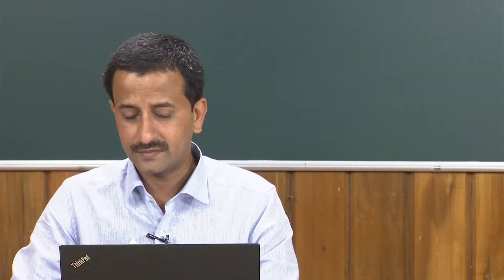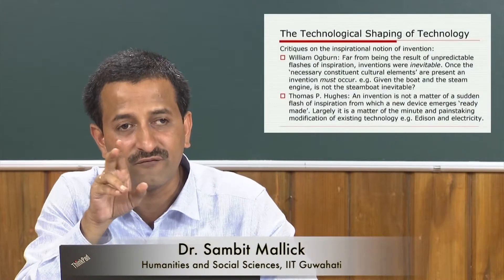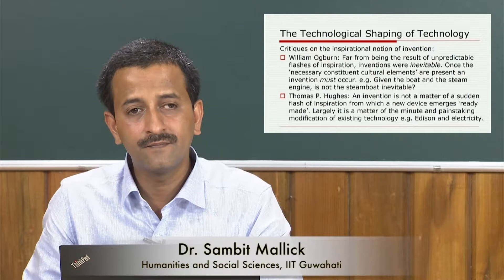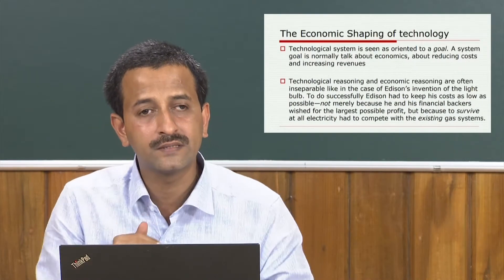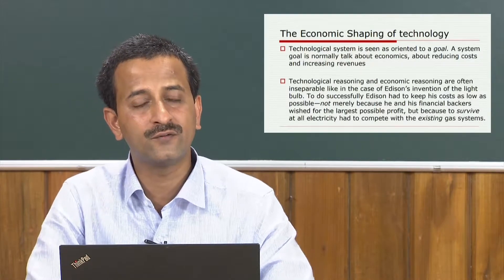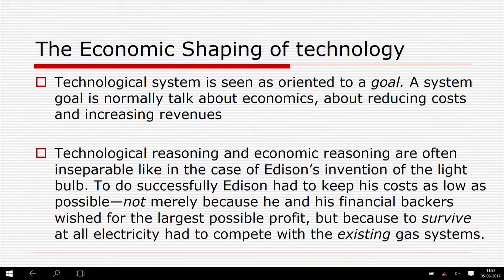When we discuss the technological shaping of technology, we have discussed the critics on the inspirational notion of invention in the form of Ogborn and Hughes. Then from the perspective on STS, transitioning from the technological shaping of technology, we come to the economic shaping of technology. The very concept of reverse salient makes sense only if a technological system is seen as oriented to a goal.